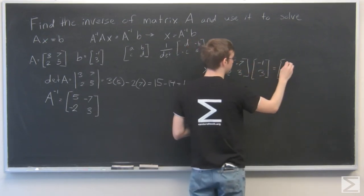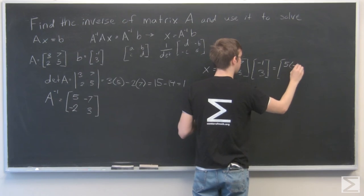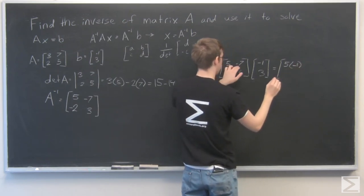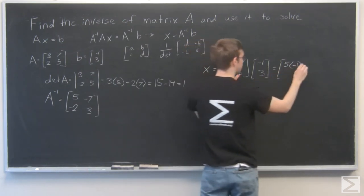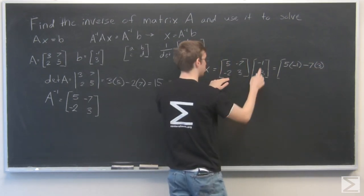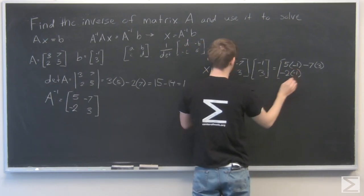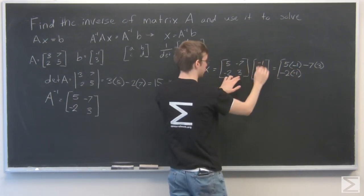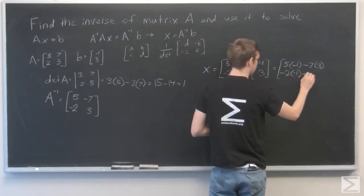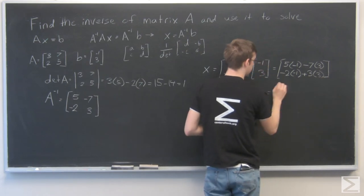So 5 times negative 1 plus minus 7 times 3, and minus 2 times minus 1 plus 3 times 3. And the result of that...